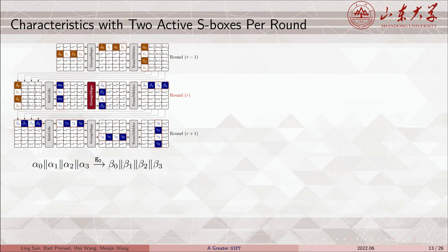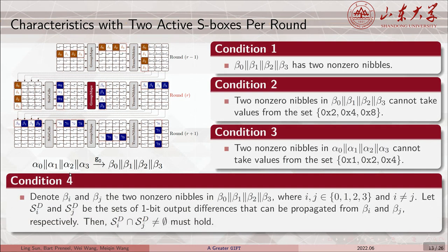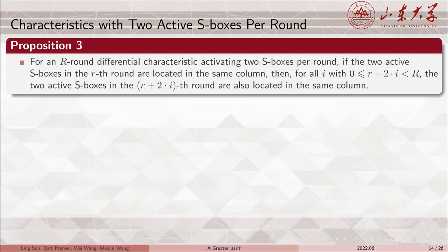Given a differential characteristic with two active S-boxes per round, we assume that the two active S-boxes in the R-th round are located in the same column, and denote the differential propagation of the group mapping on this column. We show that this propagation should meet four conditions so that the differential characteristic based on it can sustain two active S-boxes in round R−1 and R+1. In other words, these are necessary conditions for propagations in long differential characteristics with two active S-boxes per round.